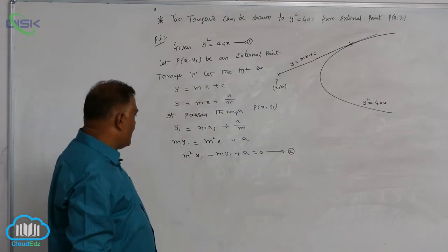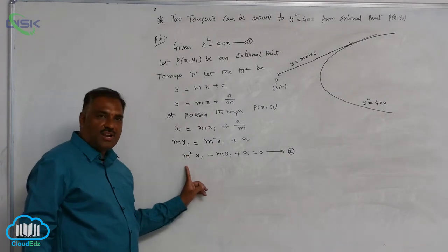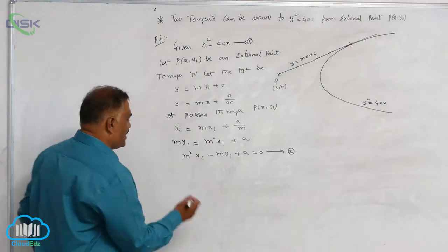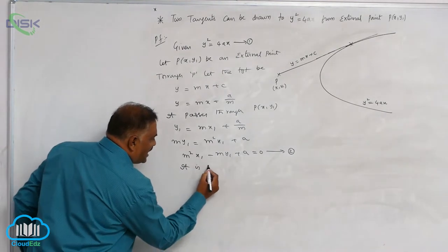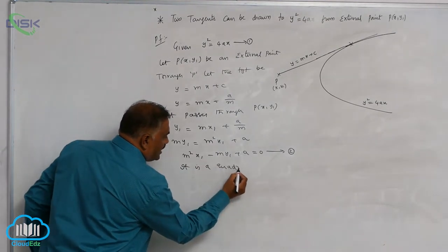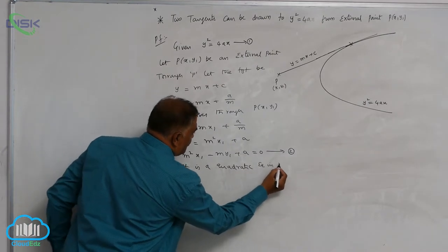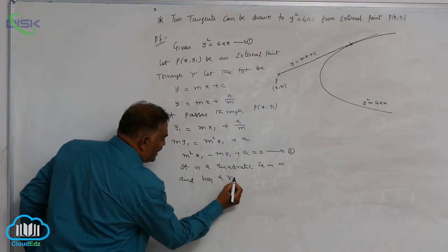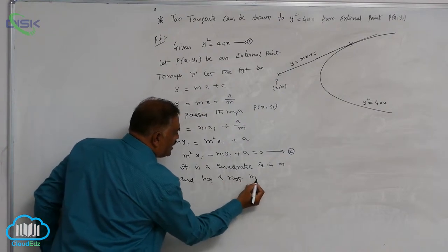You are able to see very clearly, is it a quadratic in m or not? When m is a quadratic, it will have two roots. So it is a quadratic equation in m and has two roots, let us say m1, m2.